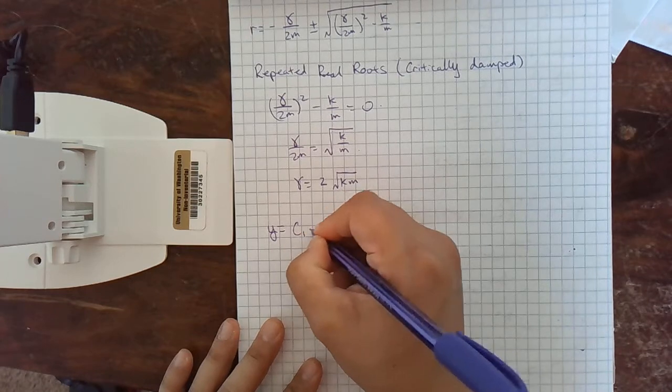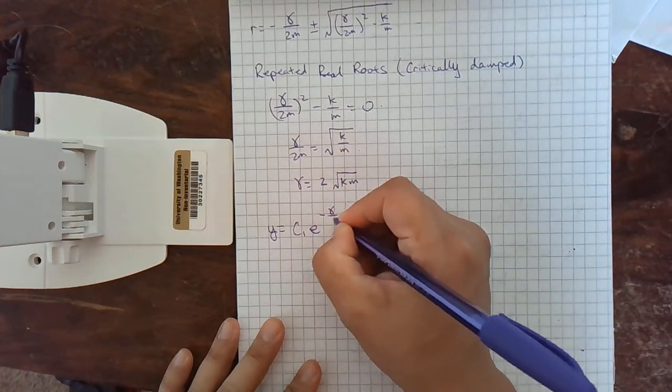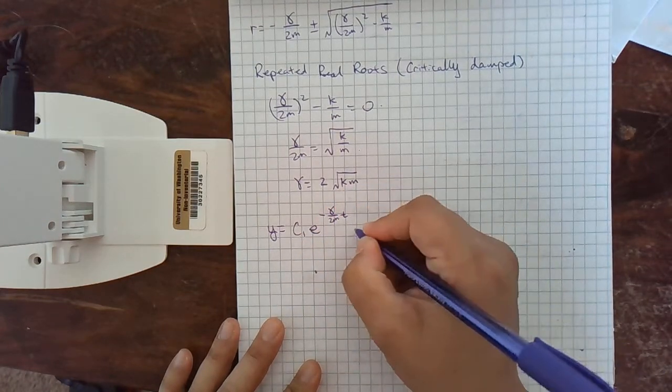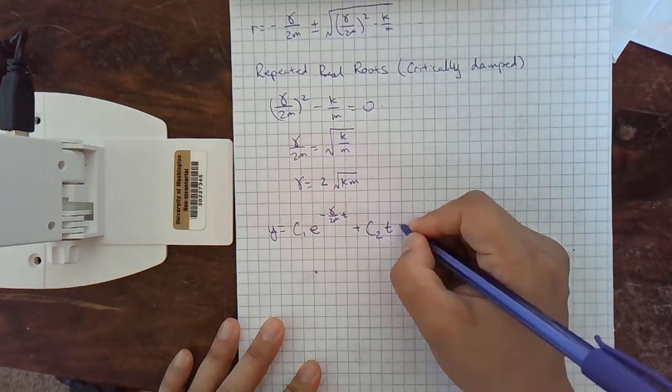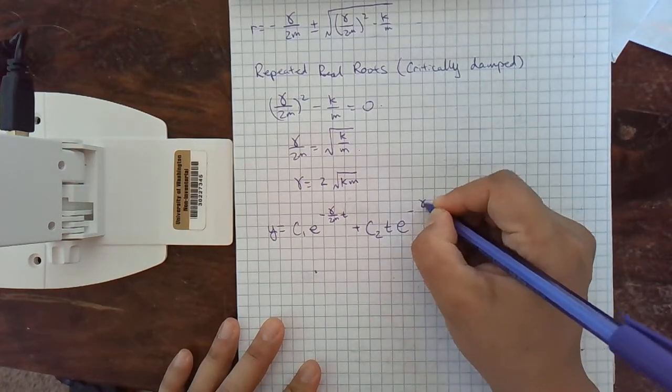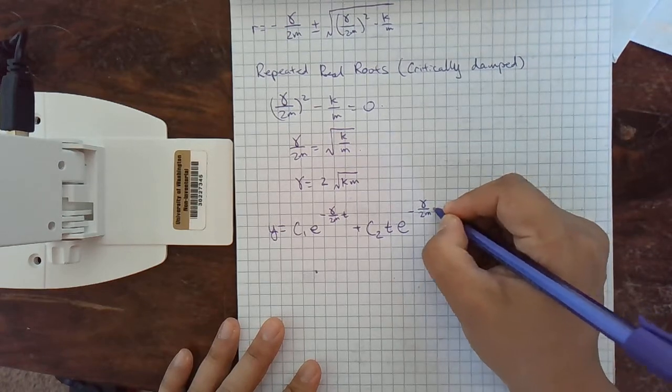So the solution is going to be c1 e to the negative gamma over 2m t. And remember, with a repeated root, the second instance comes with a t, e to the negative gamma over 2m t.